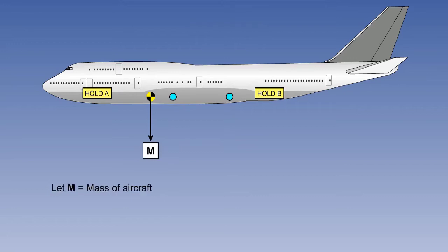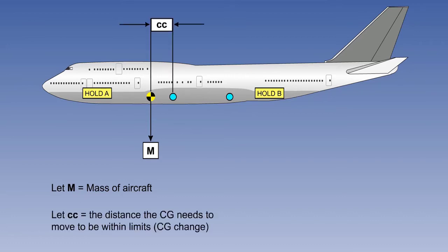We will look at resolving the out-of-limits centre of gravity problem by using a formula for repositioning of load. Firstly, let letter M represent the mass of the aeroplane. Now, let CC represent the distance the centre of gravity needs to move to come within limits.